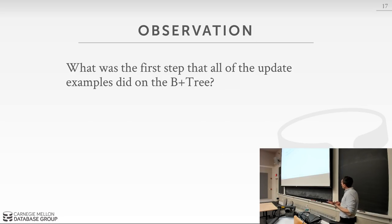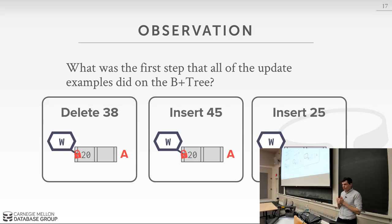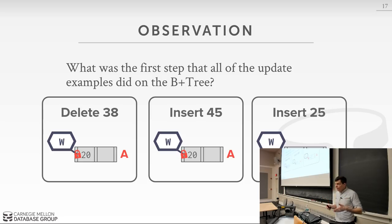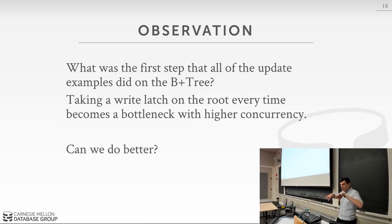Here's an important observation: in every single case where we were updating the tree, the very first step was locking the root — and for updates, that's a write latch, so nobody can even read it. This becomes a major bottleneck because every thread wanting to do anything has to lock the root, essentially making this a serial, single-threaded data structure. In a highly parallel environment everyone is contending on that one point even if they're going down different parts of the tree.